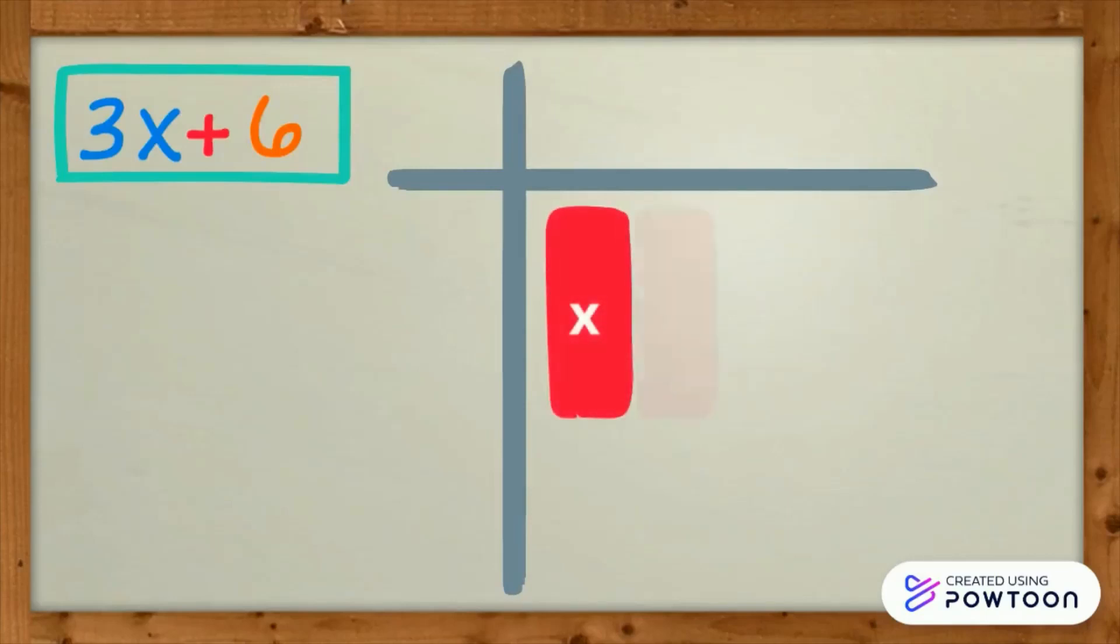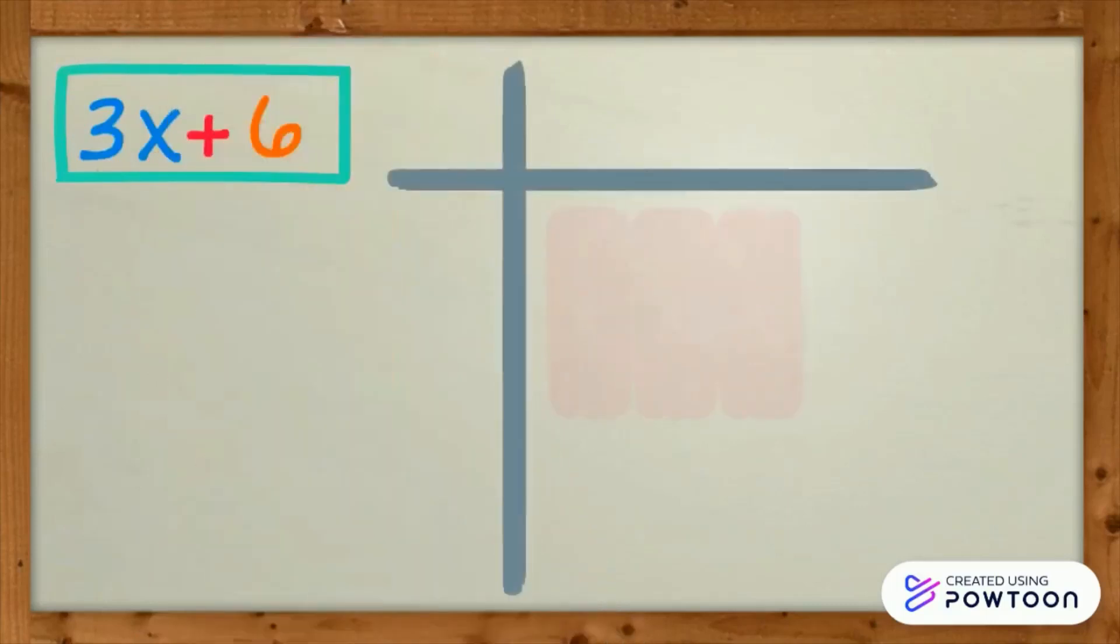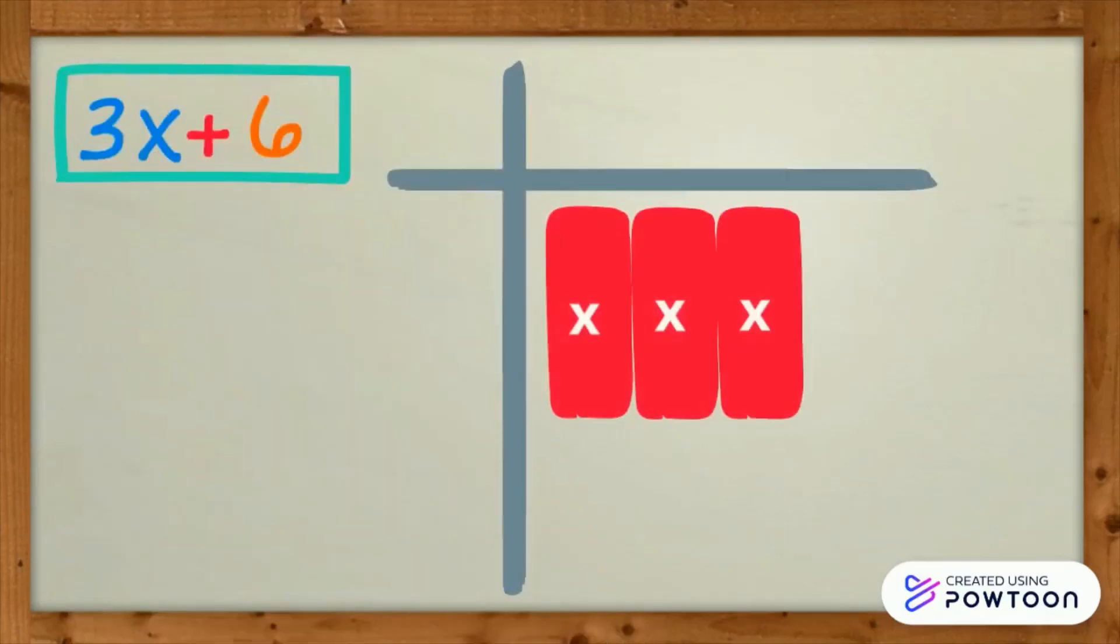1x tile, the 2x, and the 3x. Where to put the positive 6 tiles? The unit tile has 1 at its dimension. Therefore, place the unit tiles like this, following the size of the sides.